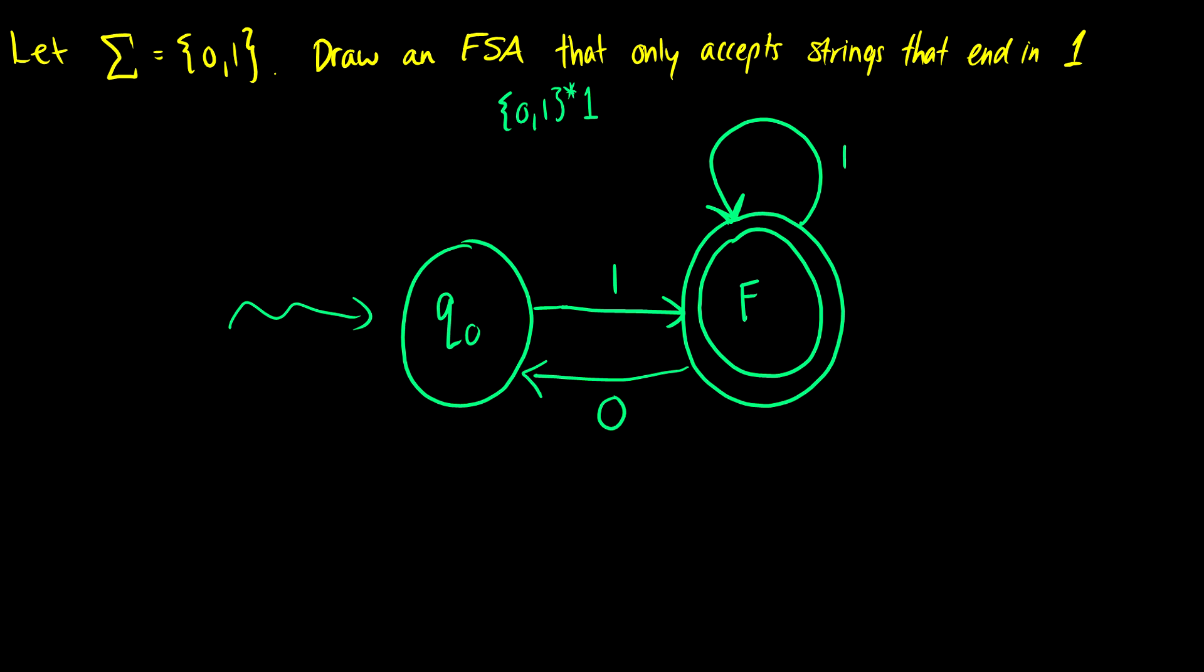If we have another 1, we're also in the final state. If we get a 0, it goes back to the start state. So what happens if we have another 0 to start off with? Well we just want to loop back to the start state. So this is what our finite state machine is going to look like.